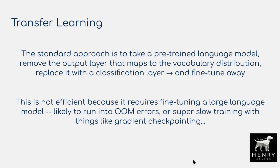To stay on the background: transfer learning is a very successful technique in deep learning where the standard approach is to take a pre-trained model, remove the output layer that maps to the vocabulary distribution, replace it with a classification layer, and then fine-tune the model with supervised labels for the downstream task. This isn't efficient because it requires fine-tuning this large language model, likely running into out-of-memory errors or very slow training.